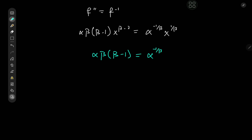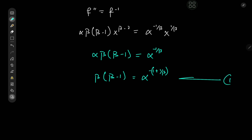Expanding by dividing by alpha gives us beta times beta minus 1 equal to alpha to the negative 1 minus 1 over beta, which can be simplified by factoring out the negative 1, giving us negative 1 times 1 plus 1 over beta in the parentheses. I'll leave this equation in this form for reasons that will become apparent later.